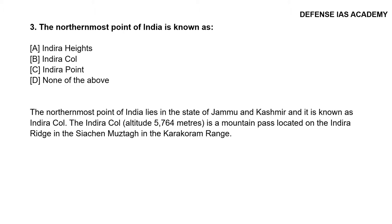Question 3: The northernmost point of India is known as? The correct answer is option B, Indira Col. The northernmost point of India lies in the state of Jammu and Kashmir and it is known as Indira Col. The Indira Col, which has an altitude of 5,764 meters, is a mountain pass located in the Indira Ridge in the Siachen Glacier of the Karakoram range.